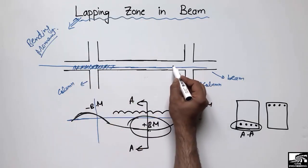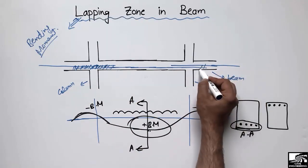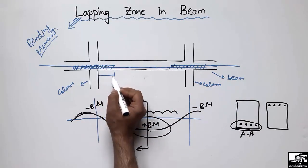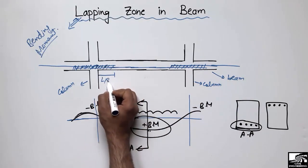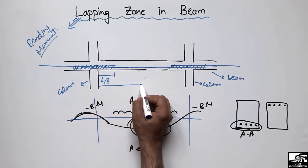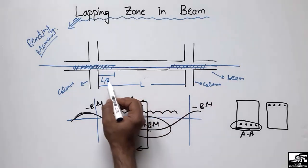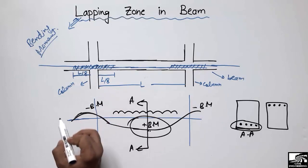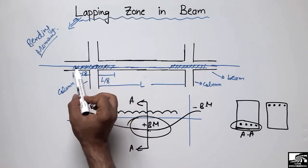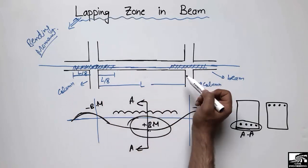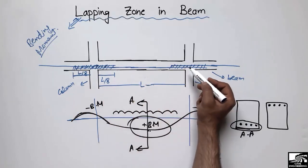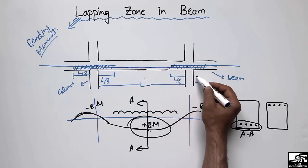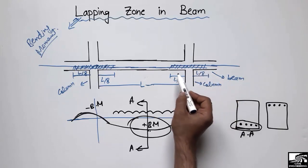So the overlapping zone is near the supports — this steel bar can be overlapped here near the support. The distance over which we can overlap the steel bar should be equal to L/8, where L is the length of the beam. So it should be L/8 from the left support and also L/8 from the right support — that is the distance we are allowed to overlap our steel bars.